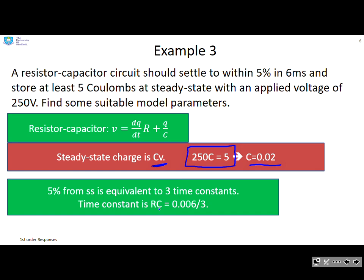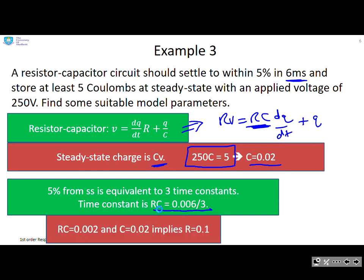Now 5% from steady state is equivalent to 3 time constants. That's an observation you should know about first order systems. The time constant is going to be rc. If you put this formula into time constant form, you get rv equals rc dq/dt plus q, so the time constant is rc. So rc is going to be 6 milliseconds divided by 3, which is 0.006 divided by 3. Now I take the two pieces of information: rc is 0.002, c equals 0.02, and therefore r has to be 0.1.